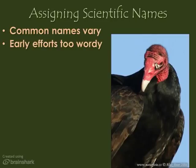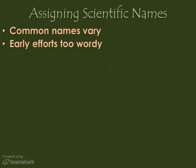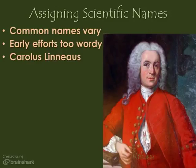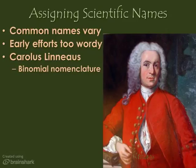Back in the 1700s, someone would have called this bird 'bird with red featherless head and dark single colored feathers.' That would be the name of this bird. That's very long and very wordy. And the problem was a lot of scientists and biologists couldn't agree on which characteristics were the most important. So during the 18th century, a man named Carolus Linnaeus decided he had had enough with this poor naming system and was going to develop a better system. It's called binomial nomenclature.